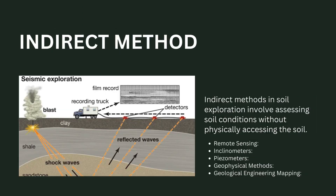The third category is the indirect methods of soil exploration. Indirect methods involve assessing soil conditions without physically accessing the soil. These methods rely on measurements, observations, or data collected from the surface or surroundings to infer information about the subsurface. Some common indirect methods include geophysical methods, remote sensing, inclinometers, piezometers, and geological engineering mapping.